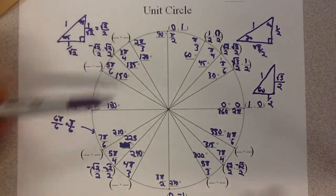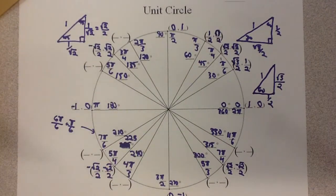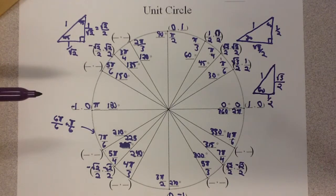Now, the same way with the 45, 45, 90, the rest of these are just going to be a change in the x or y value, or both, depending on what quadrant it's going to be in.